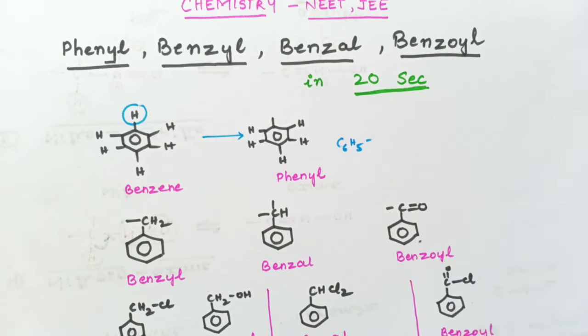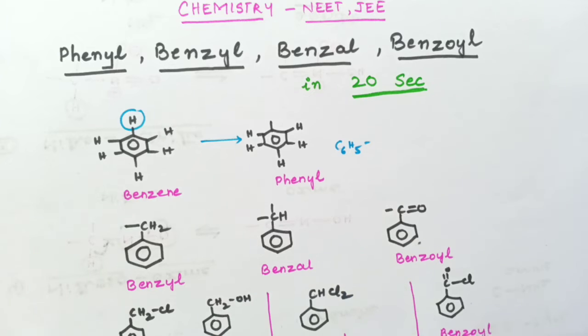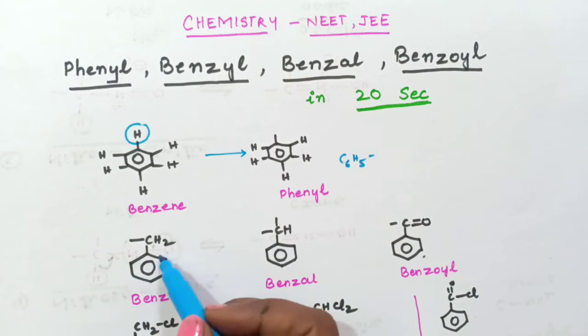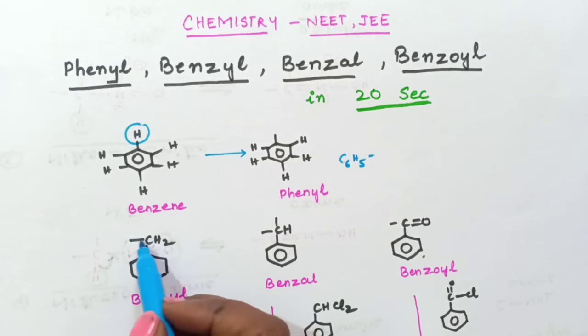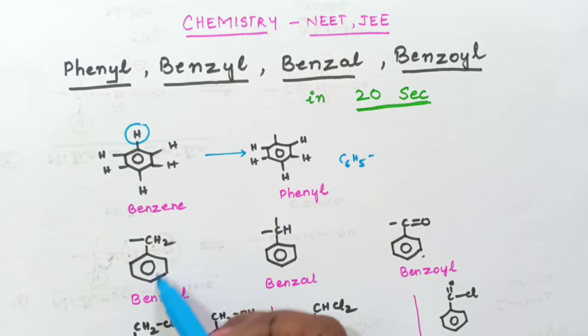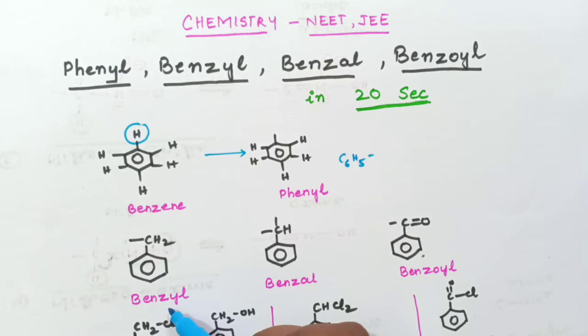Next coming to benzyl. So you can see here this is benzyl group. Benzyl group is benzene ring to that CH2 group should be attached along with 1 bond. Carbon has 4 bonds. So 2 hydrogen, 1 bond to benzene ring and then 1 more bond here. So benzene ring with CH2 group is called as benzyl.